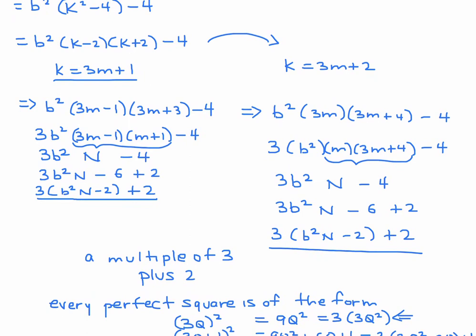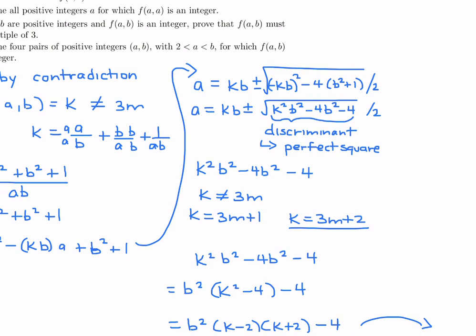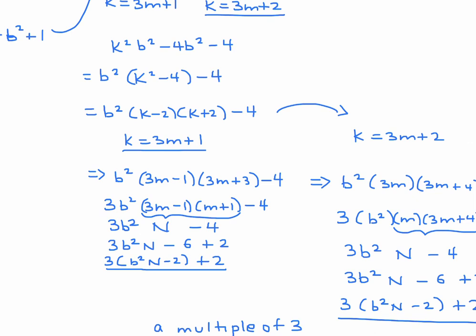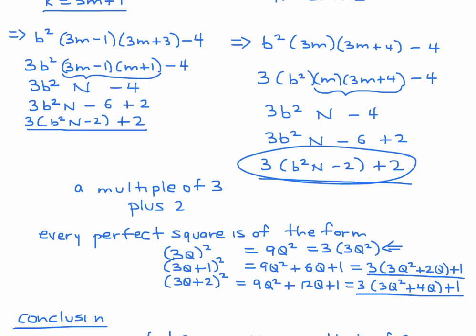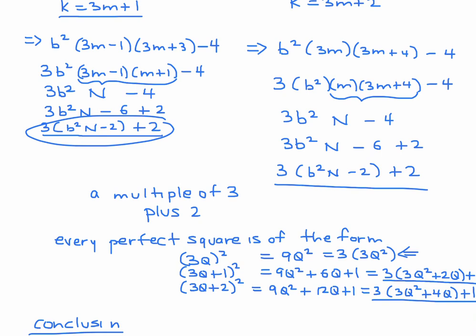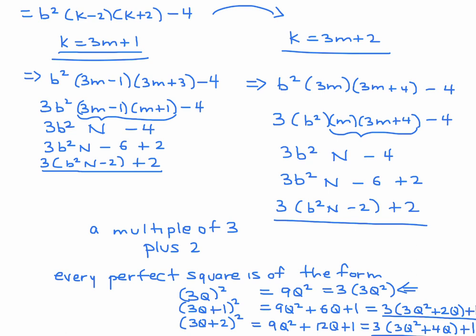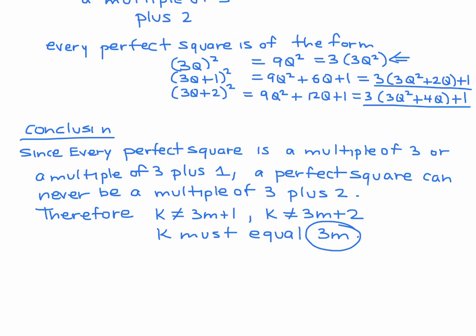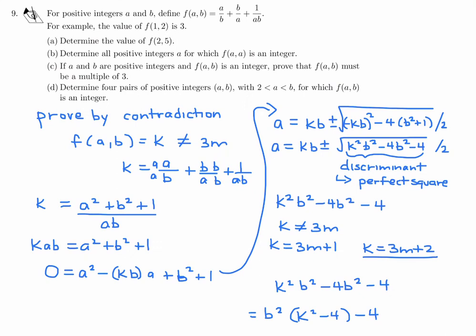Since every perfect square is either a multiple of 3 or a multiple of 3 plus 1, a perfect square can never be a multiple of 3 plus 2. Therefore k cannot be 3m + 1 and k cannot be 3m + 2. Therefore k must equal 3m — k is a multiple of 3. We assumed k was not a multiple of 3, showed both cases lead to a contradiction, so f(a, b) must be a multiple of 3. That completes question 9c.